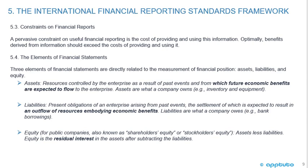Assets are resources controlled by the enterprise as a result of past events and from which future economic benefits are expected to flow to the enterprise. Assets are what a company owns — inventory and equipment, for example. Liabilities are present obligations of an enterprise arising from past events, the settlement of which is expected to result in an outflow of resources embodying economic benefits — what a company owes, such as bank borrowings. Equity, or shareholders' equity, is assets less liabilities — the residual interest in assets after subtracting liabilities.